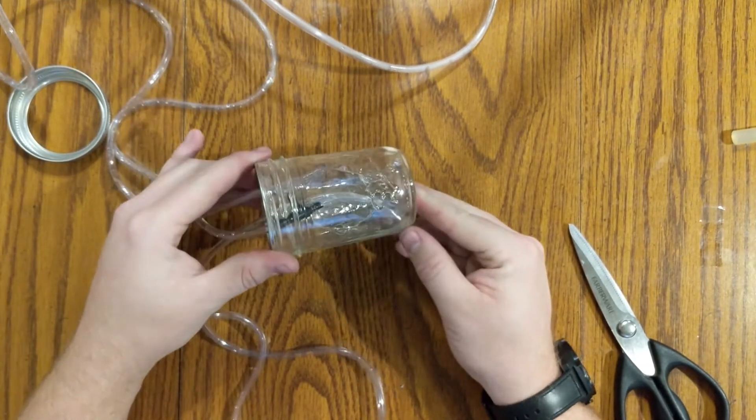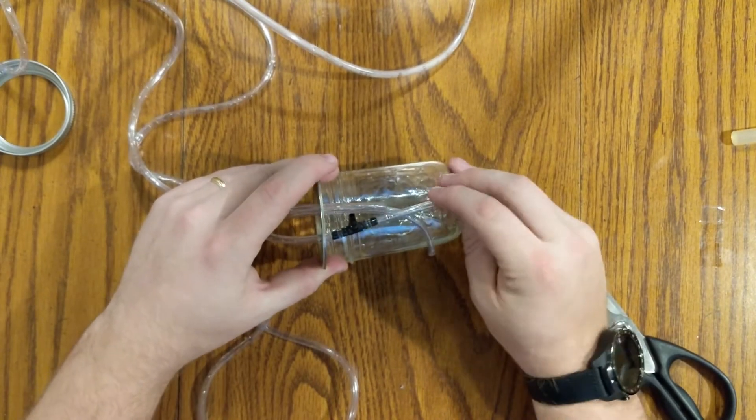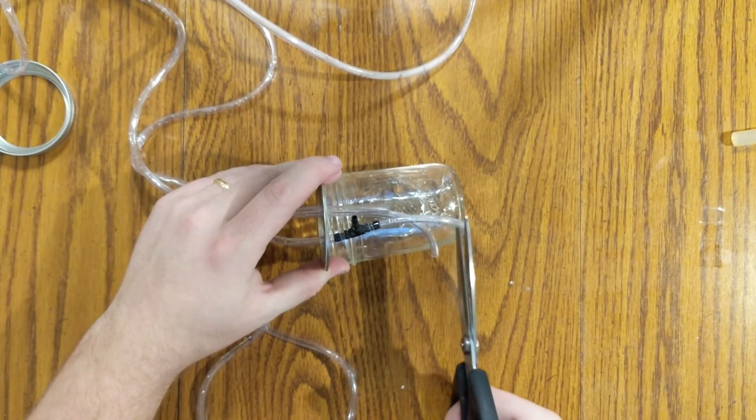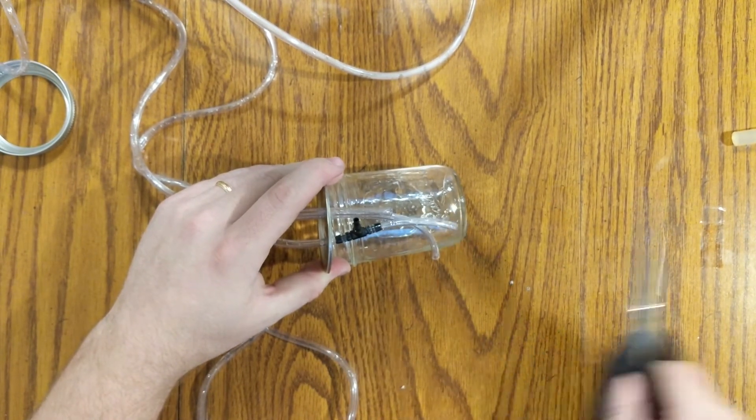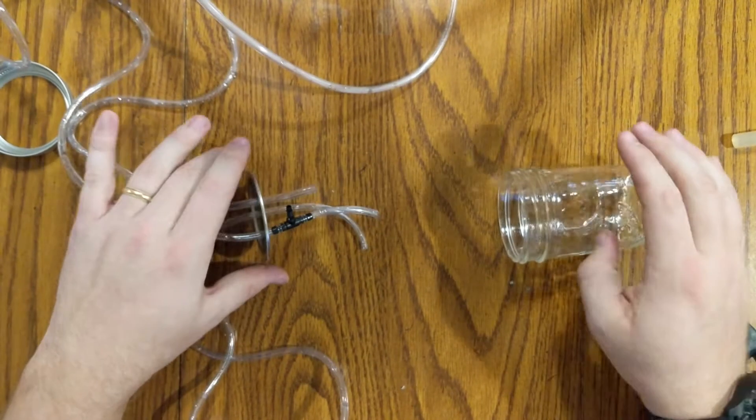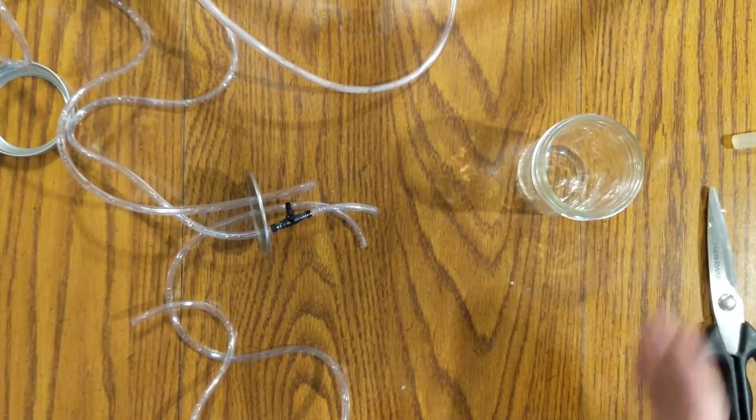Now we want this to go all the way to the bottom, but we don't want it to touch the bottom. We're going to cut it off just above the base of the jar. This way water can easily get into it, but we get as much water as we can.